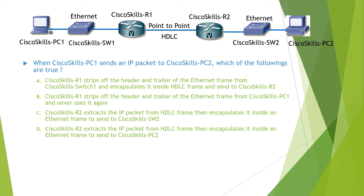When PC1 sends an IP packet to PC2, which of the following are true? To send an IP packet to PC2, PC1 first needs to encapsulate the IP packet into an Ethernet frame and send it to Router 1. When Router 1 receives the Ethernet frame, it will de-encapsulate it to get the IP packet and encapsulate the IP packet into an HDLC frame and send it to Router 2.